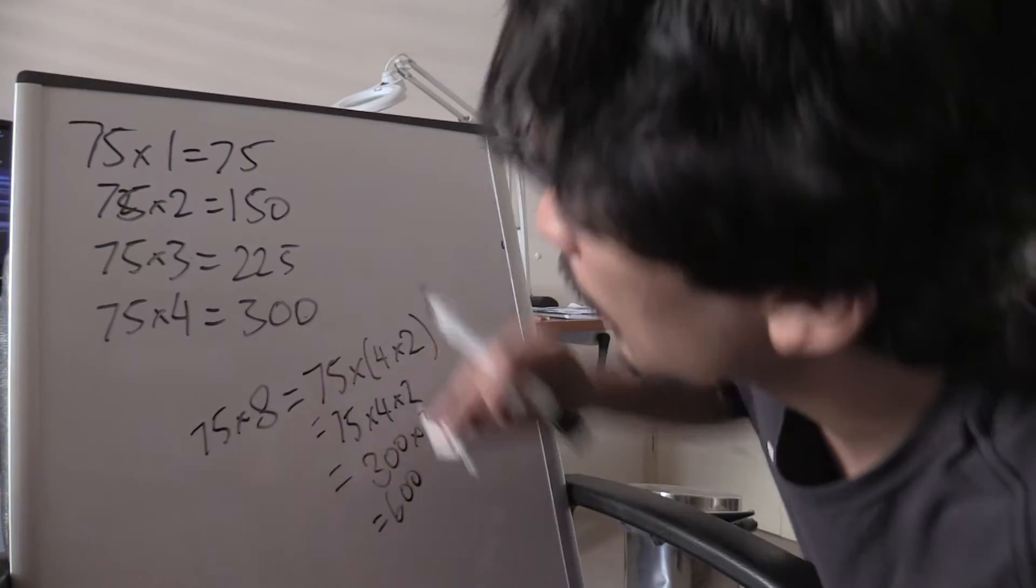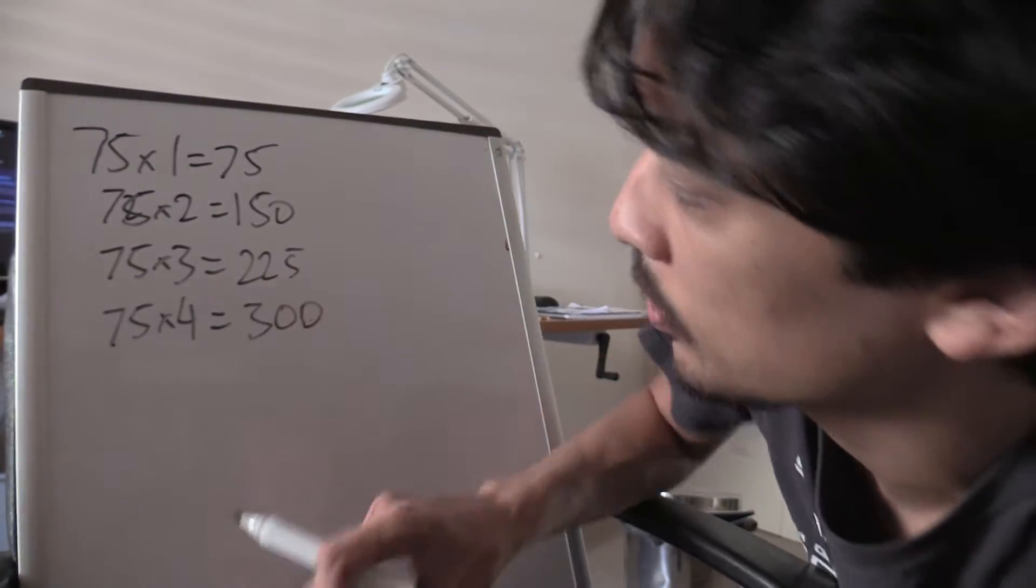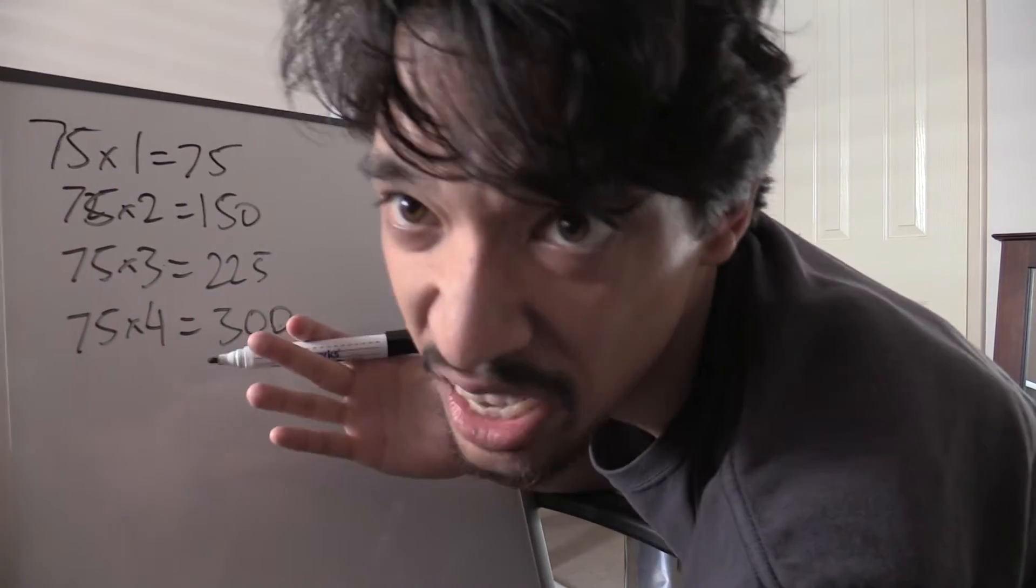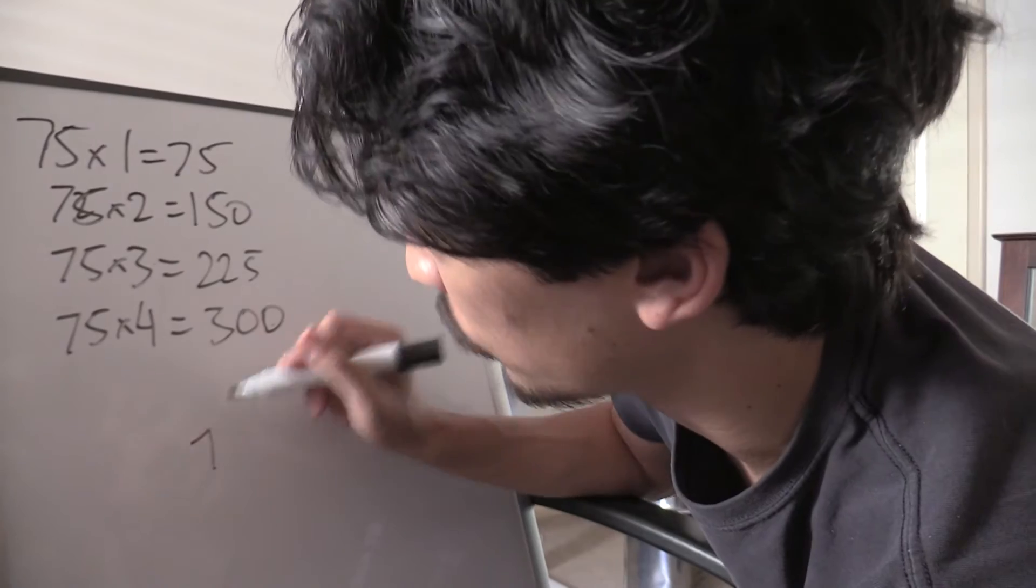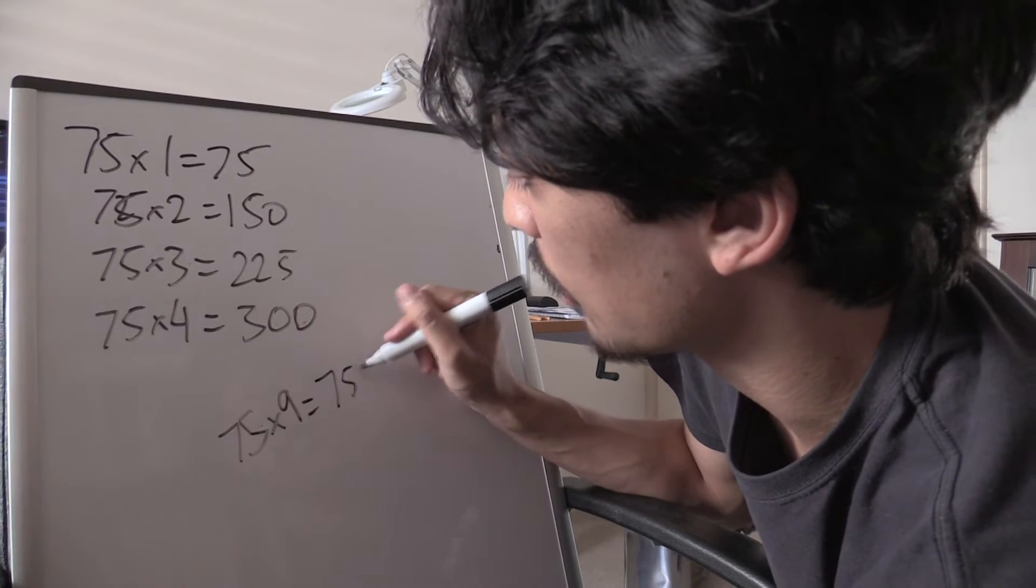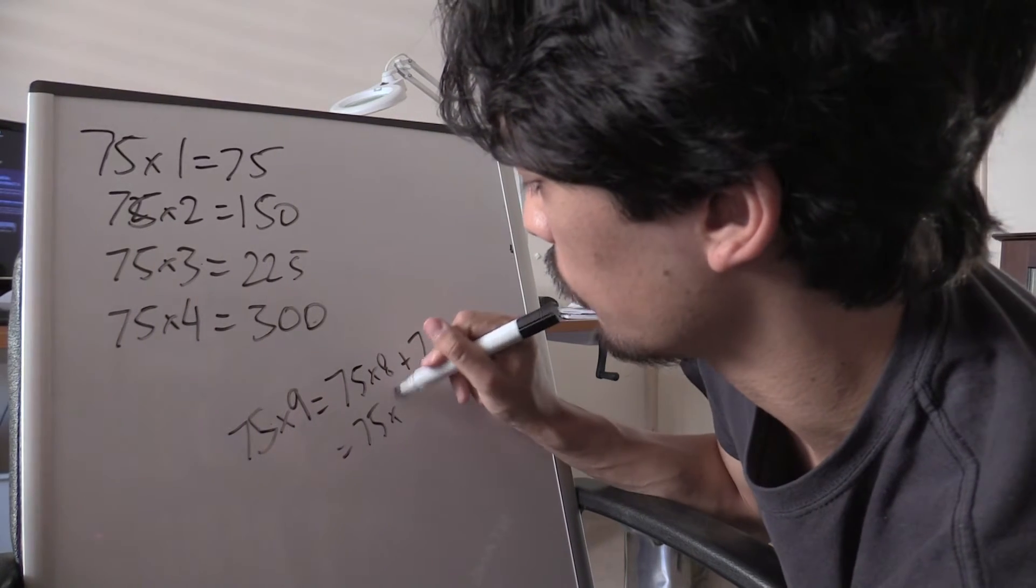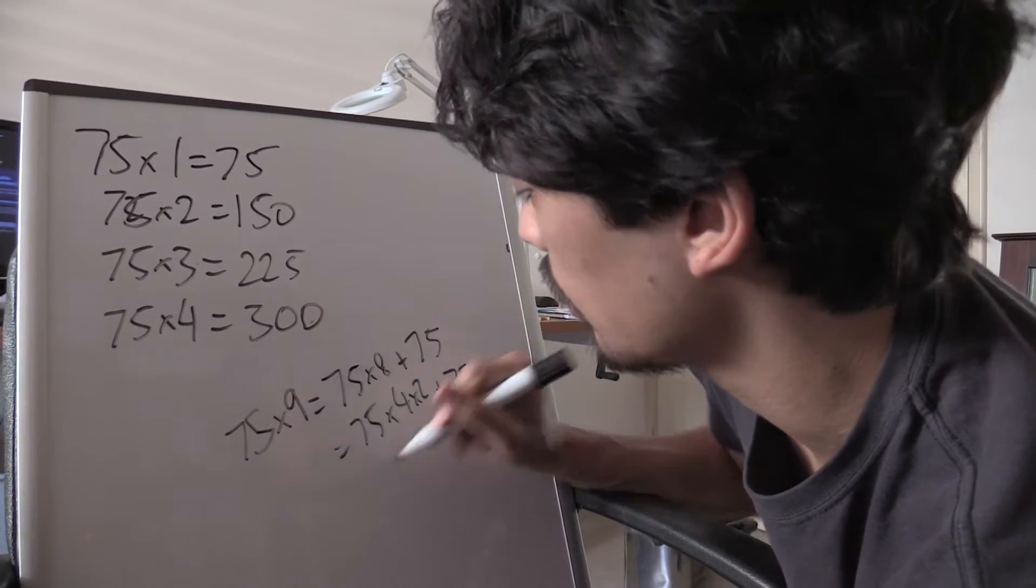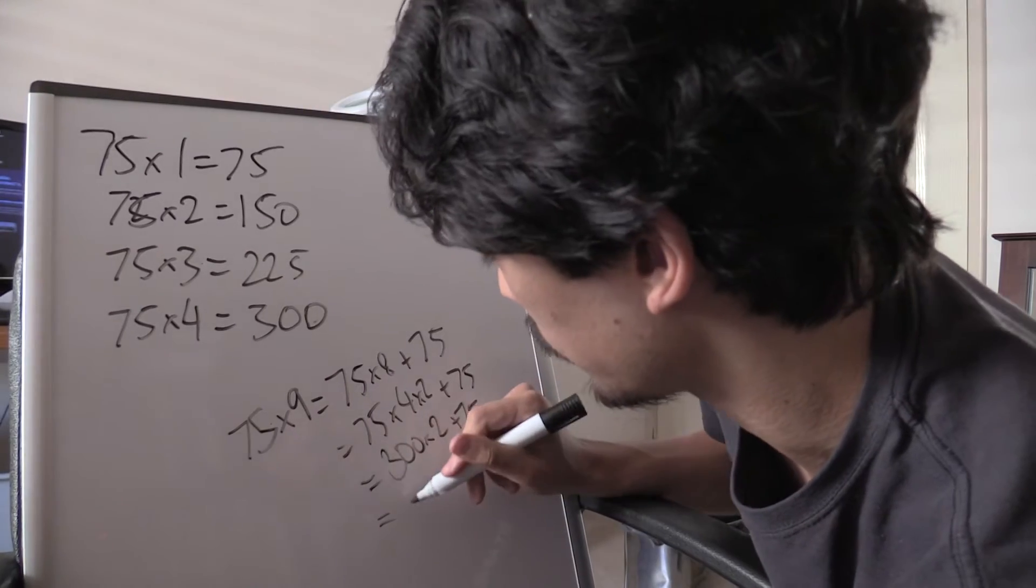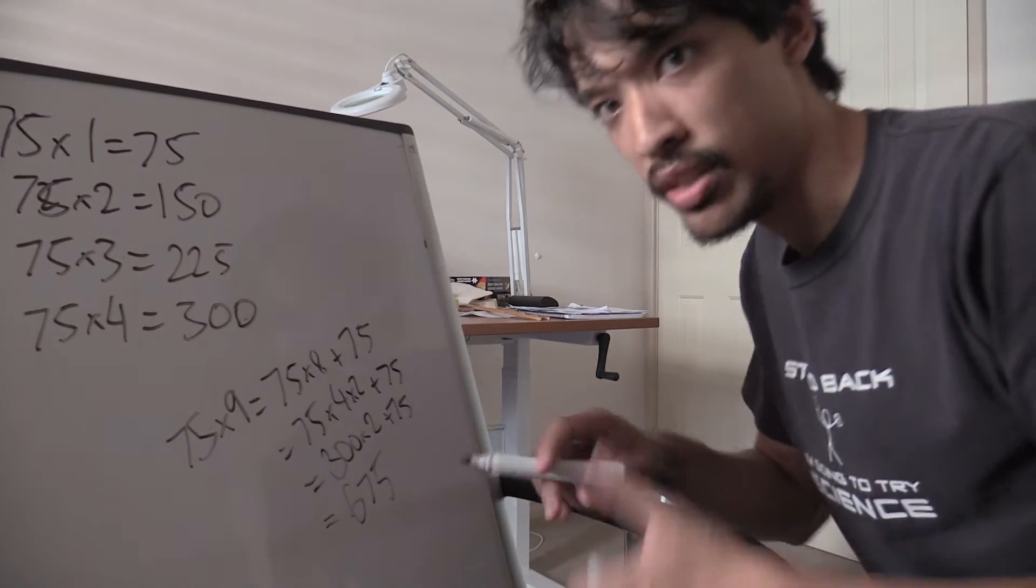Boom, 75 times 8. Now ideally you don't even need to know the other stuff, you just really need to know your 4 times table and maybe your 1 times table as well. So for example, if you got like 75 times 9, which is not a multiple of 8, you can write that as 75 times 8 add 75, which equals 75 times 4 times 2 add 75, which of course is 300 times 2 add 75, which is of course 675. Boom boom boom boom boom boom boom, 75 times 9.